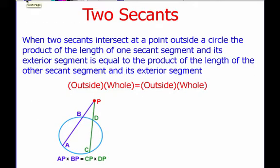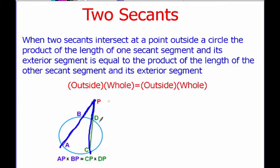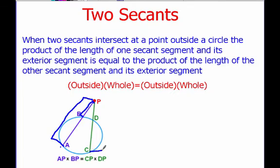Now we're going to talk about what happens when two secants intersect. When two secants intersect at a point outside of a circle, the product of the length of one secant and its exterior segment is equal to the product of the length of the other secant and its exterior segment. Here's how I think about it: it's the outside times the whole thing equals the other outside times the other whole thing. So we've got AP — that's our whole thing — times BP, that's our outside, equals CP, the whole thing, times DP, which is the outside.